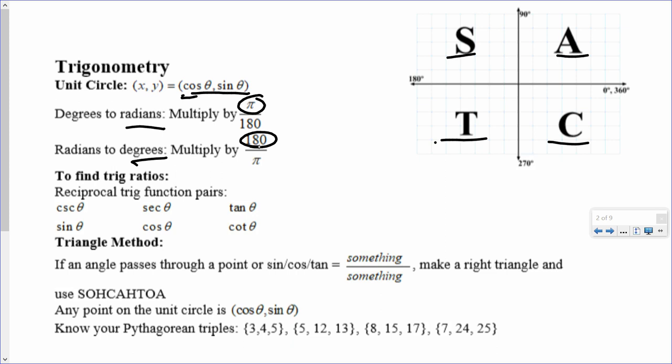To find your trig ratios, understand your reciprocal pairs. S goes with C, and C goes with S. So cosecant, the C goes with the S, the sine. Secant goes with cosine, and then tan and cotan are reciprocal, or is the third reciprocal pair.